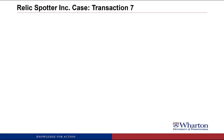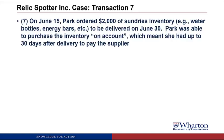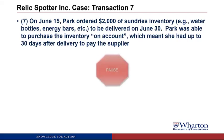Let's start back up with transaction number 7. On June 15th, Park ordered $2,000 of sundry inventory — for instance, water bottles, energy bars, etc. — to be delivered on June 30th. Park was able to purchase the inventory on account, which meant she had up to 30 days after delivery to pay the supplier.